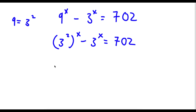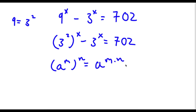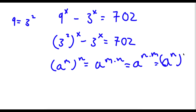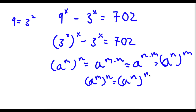Now, if I have something in the form a to the power of m to the power of n, this is equal to a to the power of m times n. And m times n are interchangeable, so this is the same thing as a to the power of n times m, meaning we could rewrite it as a to the power of n to the power of m. So a to the power of m to the power of n is equal to a to the power of n to the power of m.